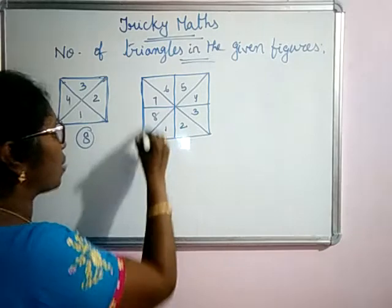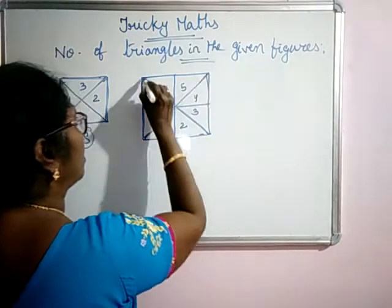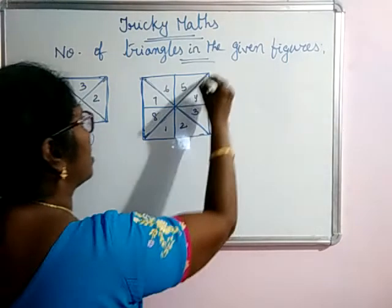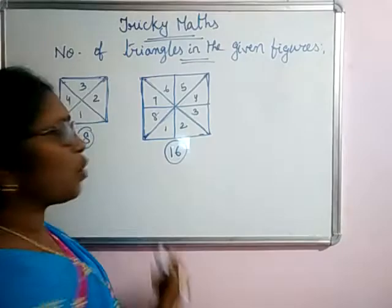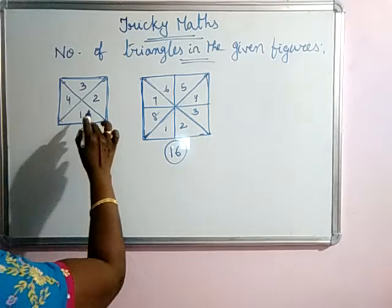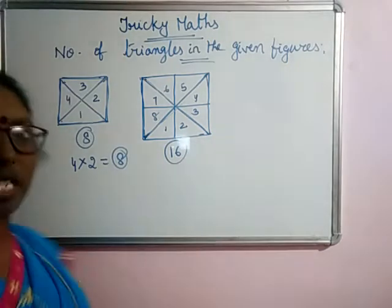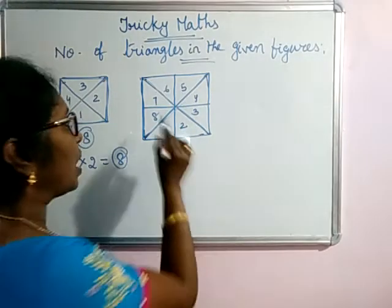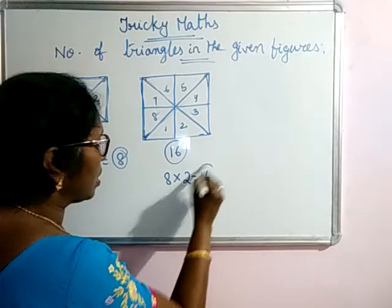After that: 13, 14, 15, 16. Are you clear? What did you observe? If a square is divided into 4 small triangles, the number of triangles in the figure is 4 into 2, which is 8. And if the figure is divided into 8 parts, the number of triangles will be 8 into 2, which is 16.